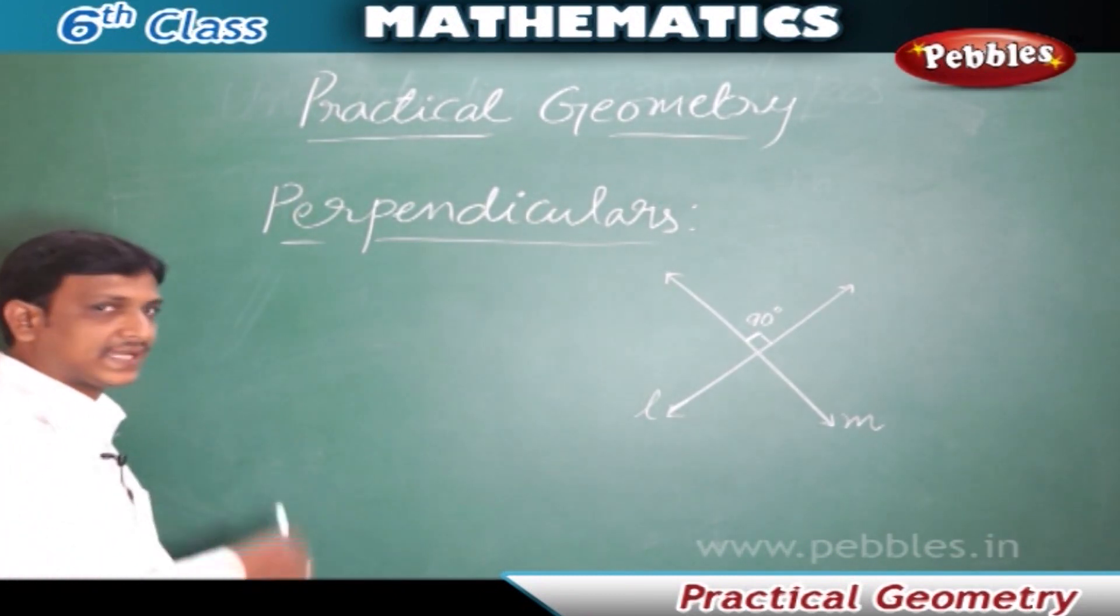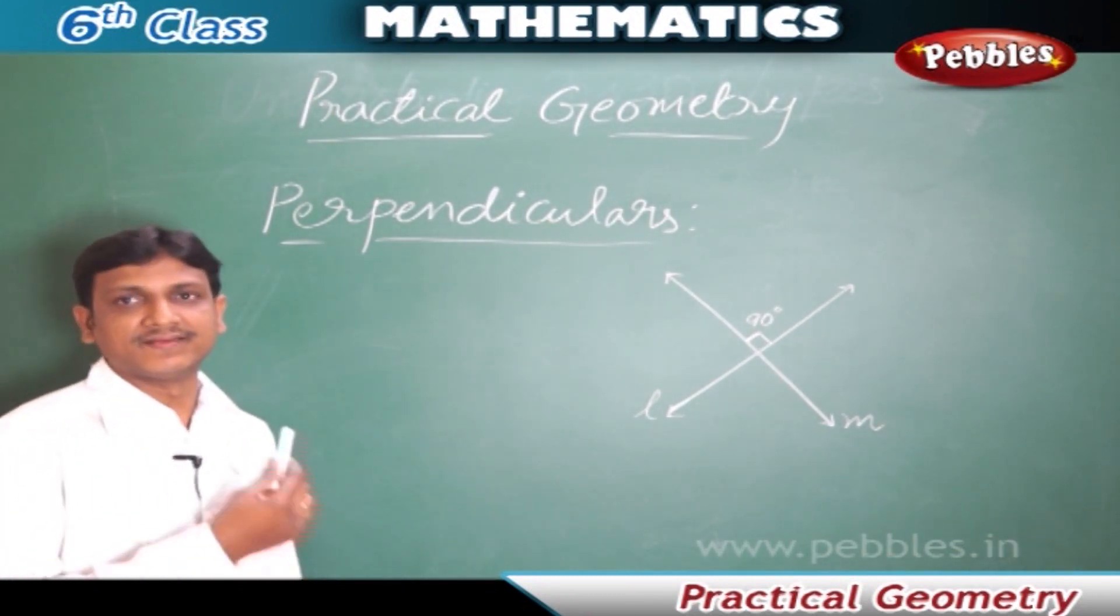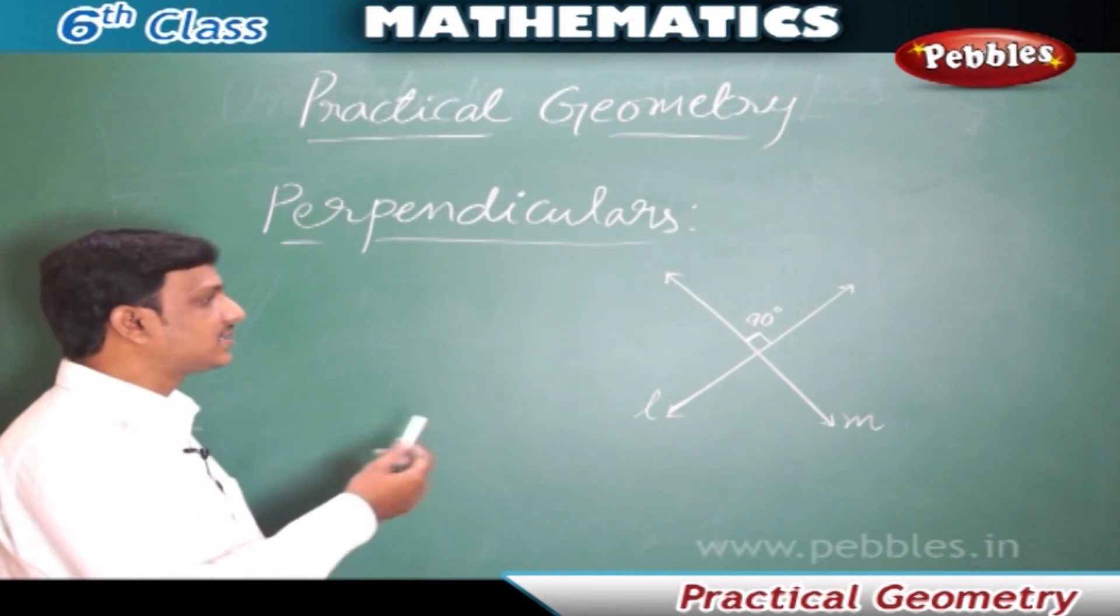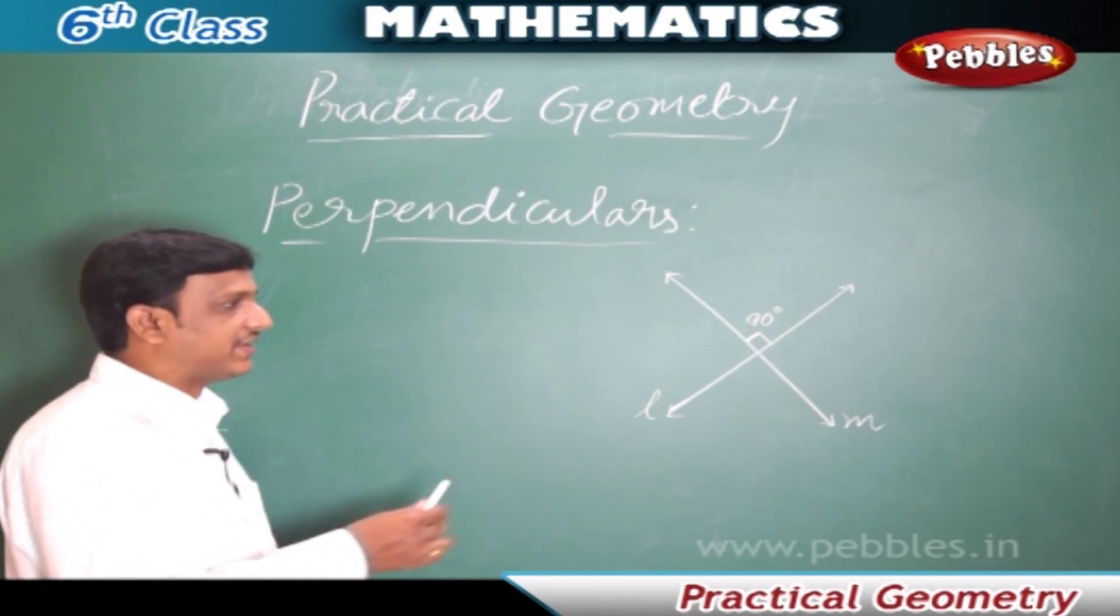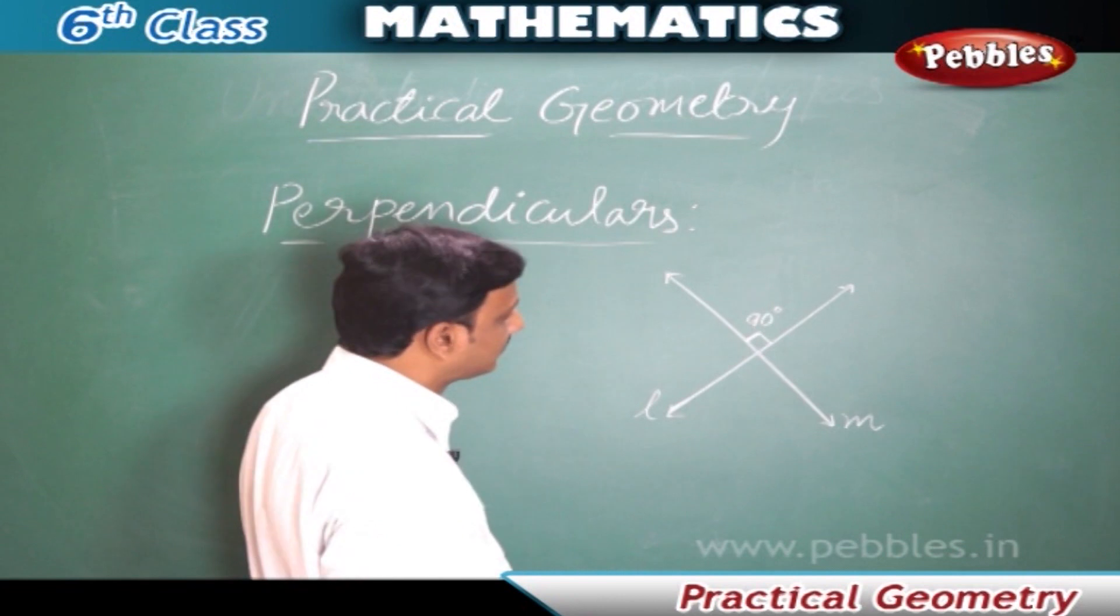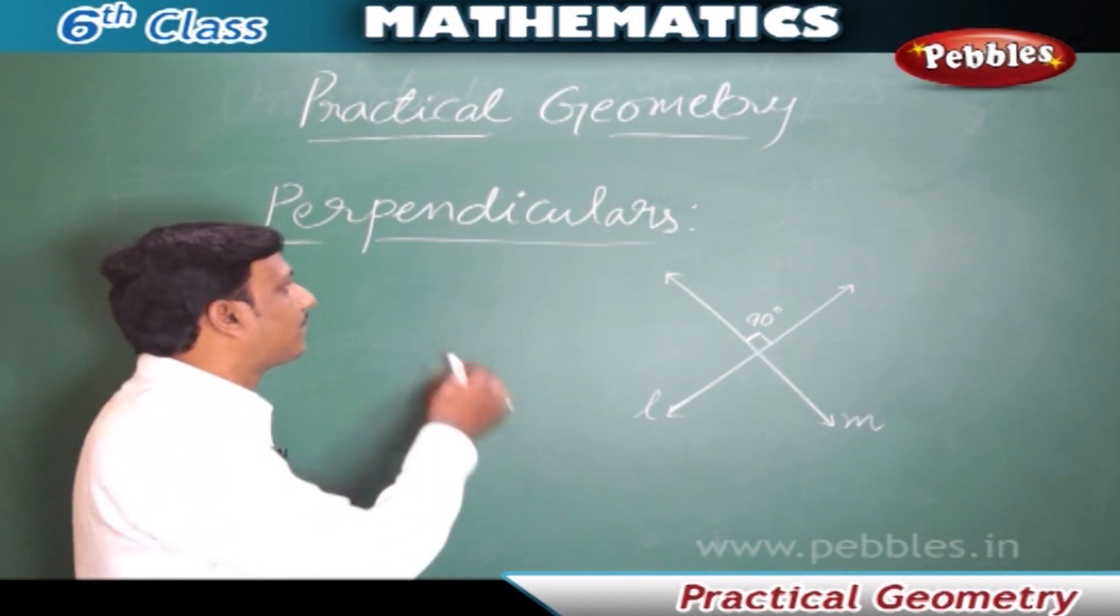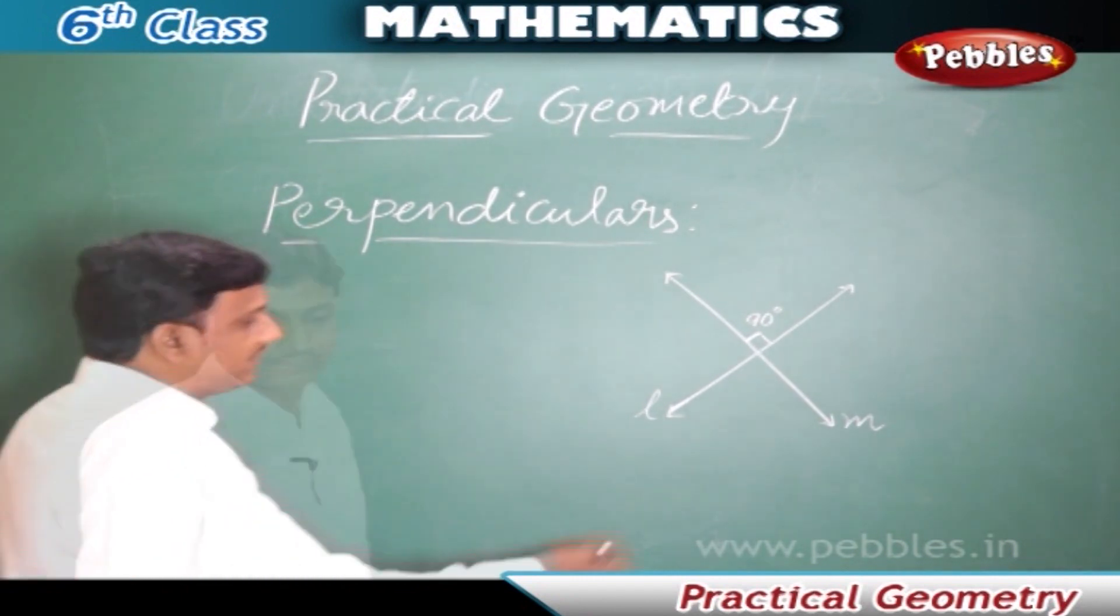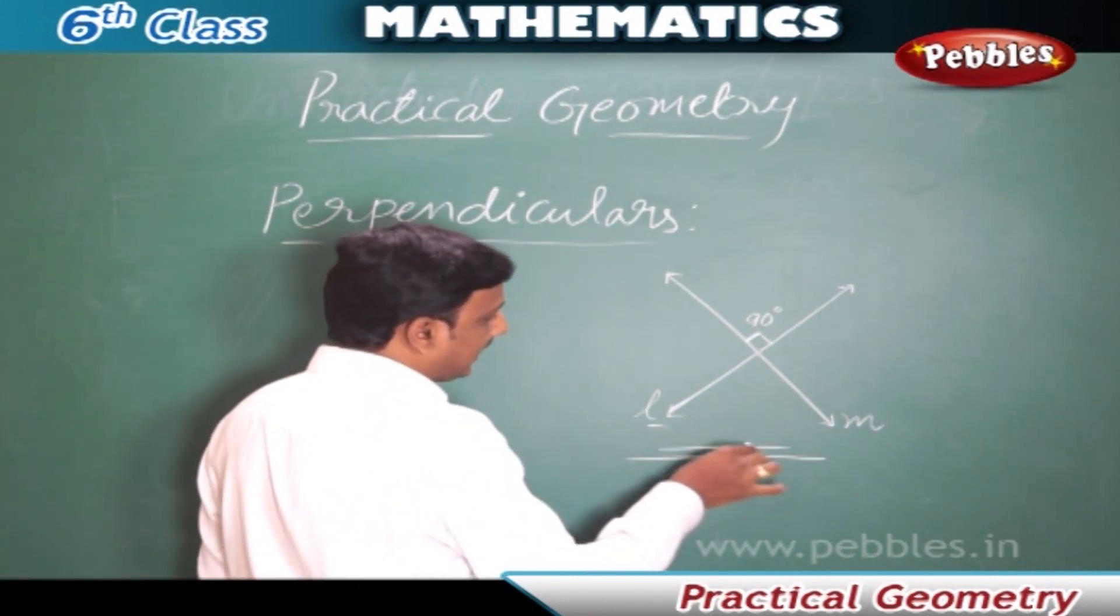Perpendicular. You know that two lines, either rays or segments, that are said to be perpendicular when they intersect each other at an angle of 90 degrees are called perpendicular. In this figure, the lines L and M are perpendicular.